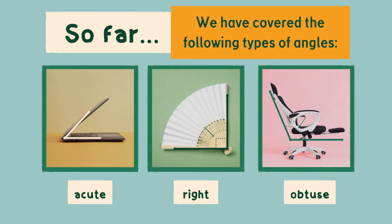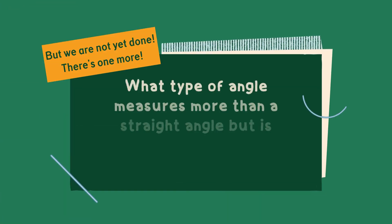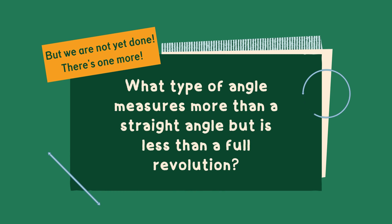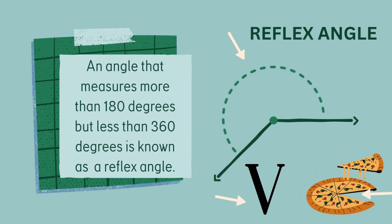So far, we have learnt acute angle, right angle, obtuse angle, straight angle and full rotation angle. There is one more last angle left for discussion. Kids, can you guess what is the type of angle which measures more than straight angle and less than full angle? Oh yeah, you are right. Reflex angle is the one that measures more than 180 degrees but less than 360 degrees. When a piece of pizza is cut from the whole pizza, the remaining part of the pizza forms a reflex angle. The exterior angle of the letter V also forms a reflex angle.